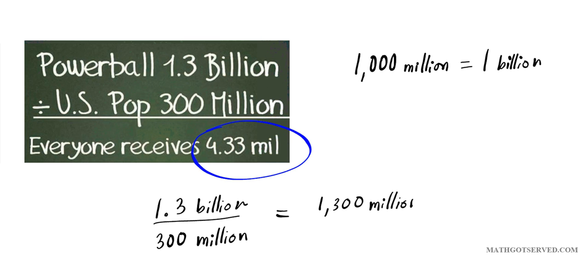Because remember, if you want to convert from billion to million, you multiply by a thousand and change the unit accordingly. Okay, so if you look at this equation right here, if you multiply this by a thousand, that takes you to the million.